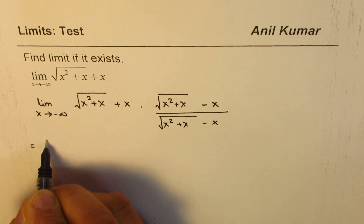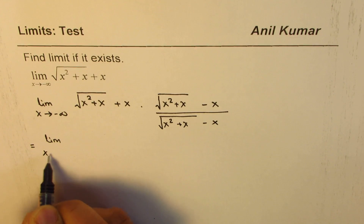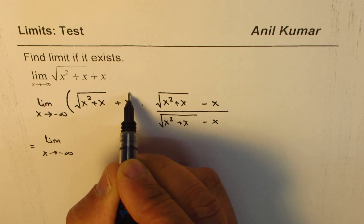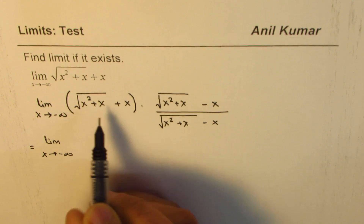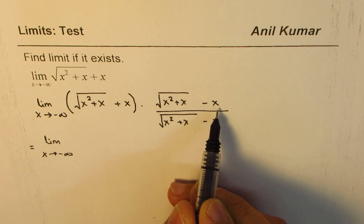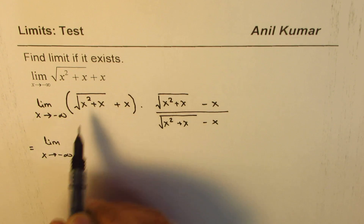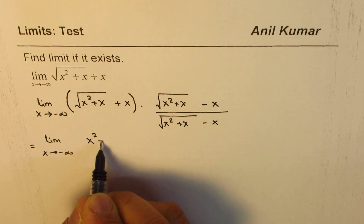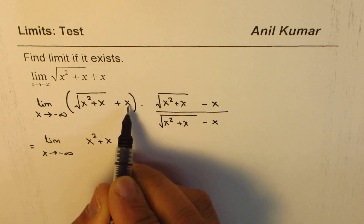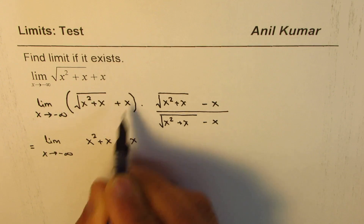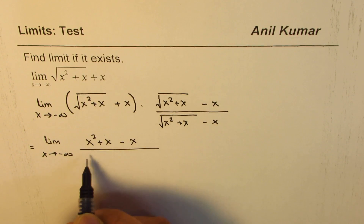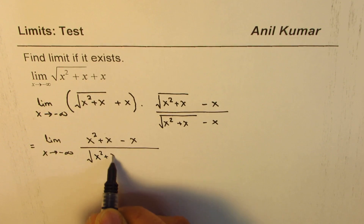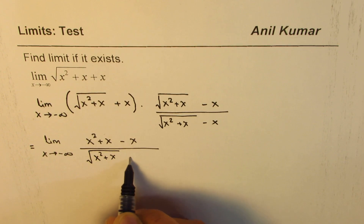That gives you limit x approaches minus infinity. When you multiply these two terms — using the identity a plus b times a minus b equals a squared minus b squared — the square of the first term gives x squared plus x, minus x squared in the numerator. The denominator is square root of x squared plus x, minus x.